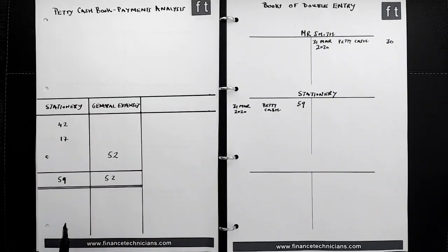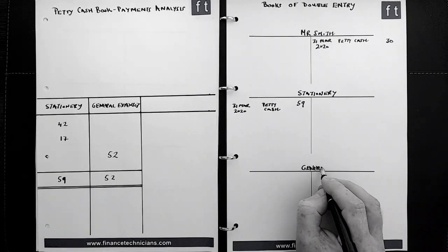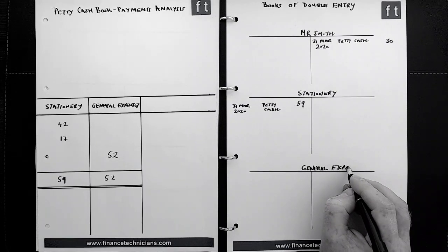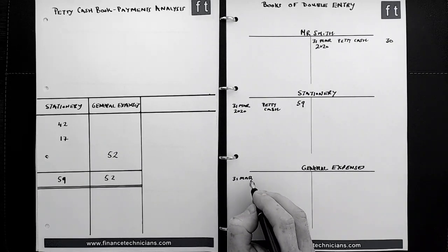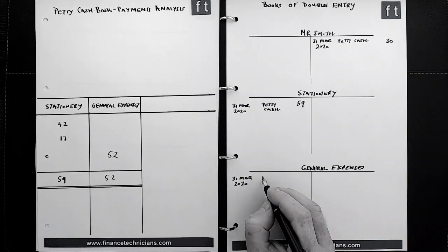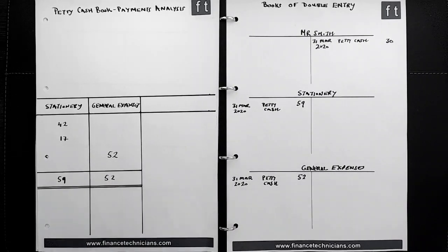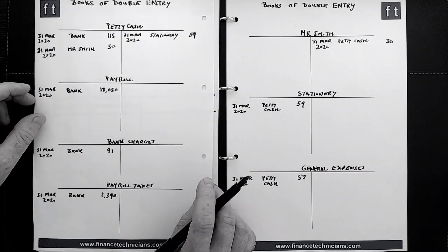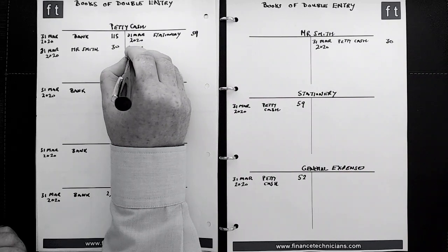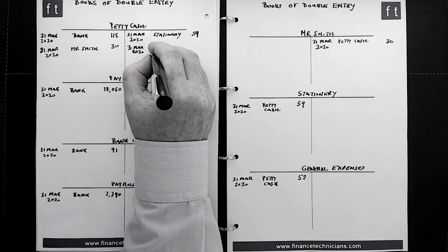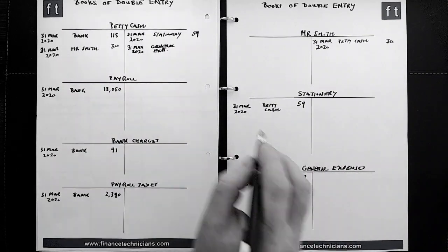We then go back to the petty cash payments analysis and record the general expenses. We open an account called general expenses and record on the debit side the quarter-end date 31st March 2020, referring to petty cash as the other account affected, with an amount of 52. Then we go back to the petty cash account and on the credit side enter the date 31st March 2020, refer to general expenses, and record the monetary amount of 52.